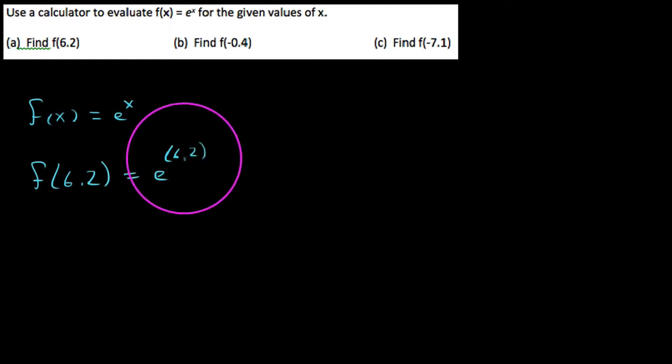Using a calculator, this is all I want to do in this video. Given F of X equals E to the X, or the natural base to the power of X, why don't we go find a few things using a calculator. The number E is on your calculators. If we wanted to find F of 6.2, this would be the same thing as E to the 6.2 power, and this will come in handy when we start evaluating for like compound interest.